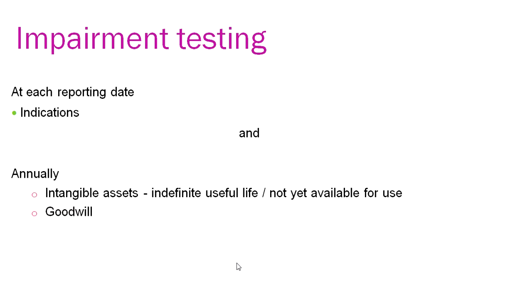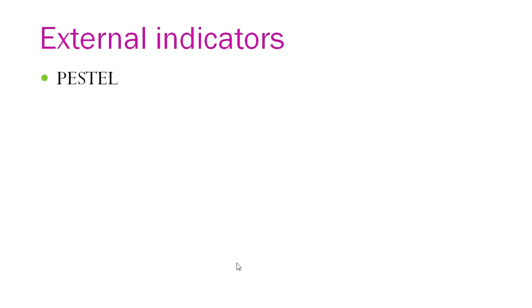Now starting with impairment testing: when is impairment required? Impairment is done at each reporting date if indicators arise. The indicators can be external or internal. External factors which have an impact on the value of the asset are termed external indicators — factors related to political, environmental, ecological, social, technological, and legal factors. For example, if political instability exists, an organization situated in an unstable political situation won't be able to do transactions with other nations.